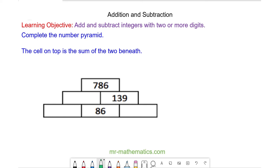Okay, so to begin with, we're going to work out this number here. So a number plus 139 adds together to make 786, so this number here will be 786 minus 139.